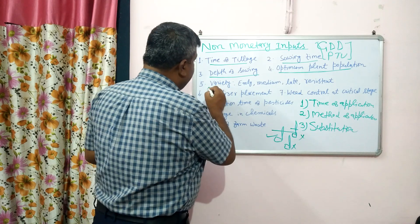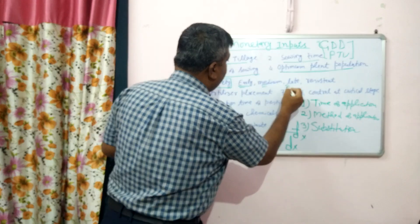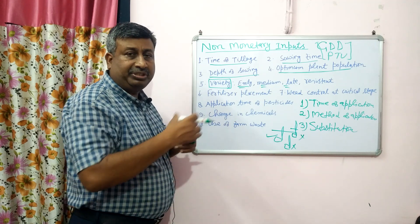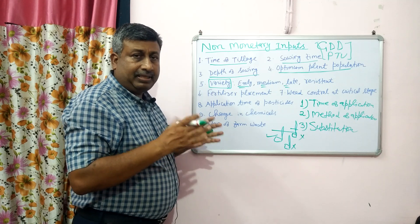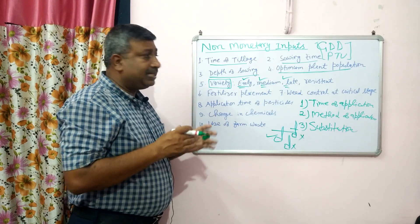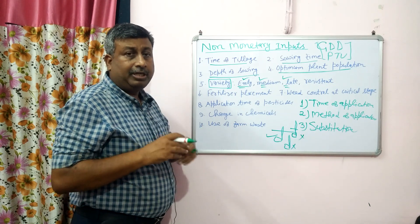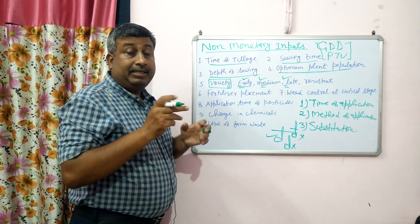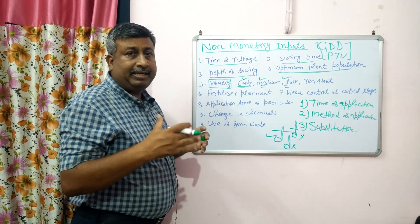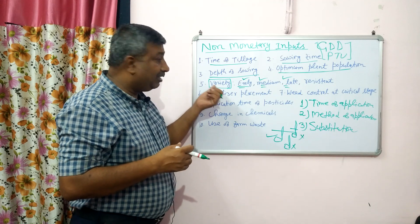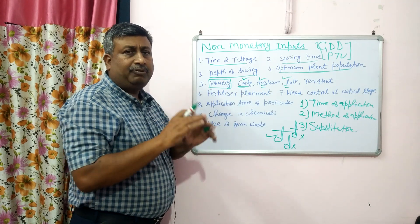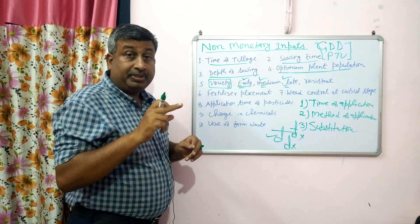Then variety selection — varieties can be early maturity, medium maturity, or late maturity. We have to decide based on the length of the growing season. If the growing season is short, we should adopt an early variety; if medium, a medium variety; if full season, a late maturity variety. If the growing season is short and we grow a late maturity variety, there will be vegetative growth but no proper crop formation.